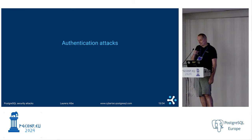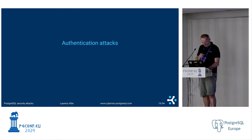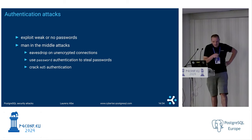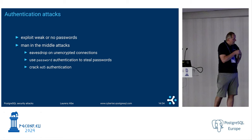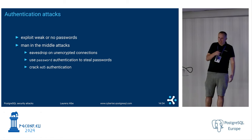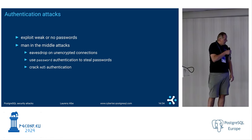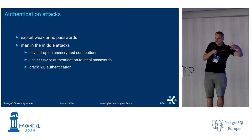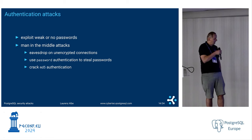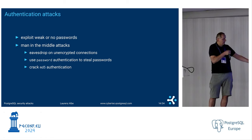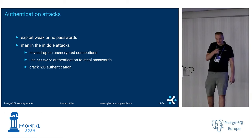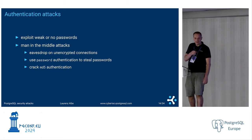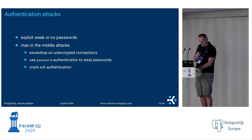Let's turn to the second chapter: authentication attacks. I divide it into two parts — exploiting passwords, which is a pretty straightforward idea, and the various man-in-the-middle attacks: either listening to a connection that's not encrypted, or impersonating the server. We'll see how to exploit these to crack certain authentication methods.